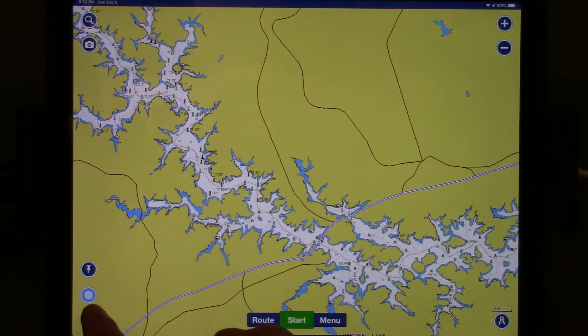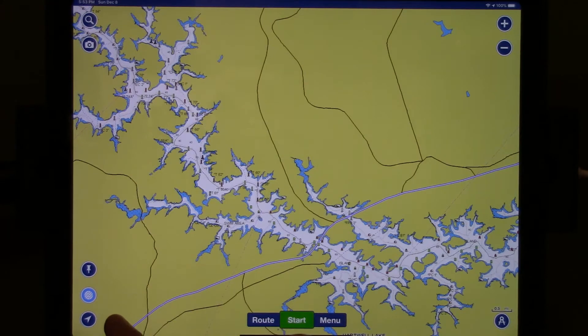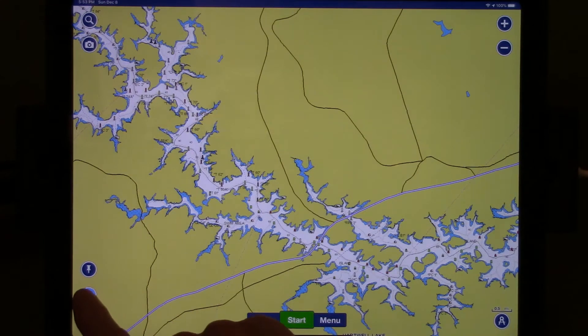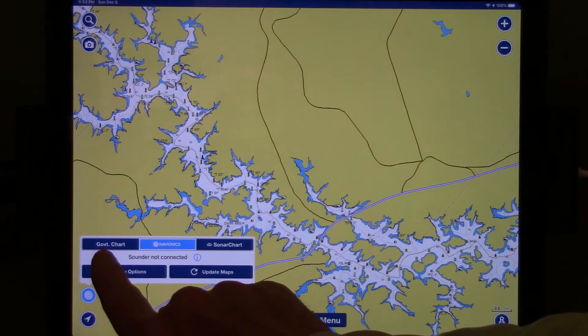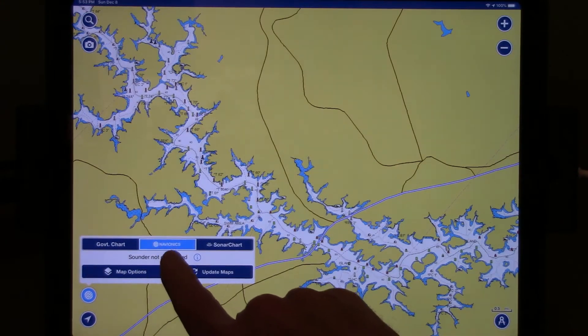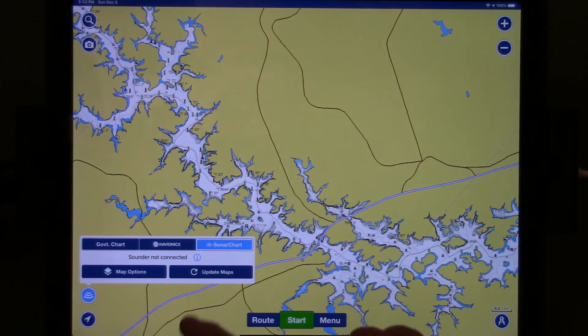The first thing you should note are these three small icons on the lower left-hand corner of the screen. If you select the one in the middle, you've got several options here: Government Chart, Navionics, and Sonar Chart. You definitely want to select Sonar Chart.